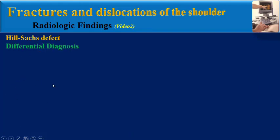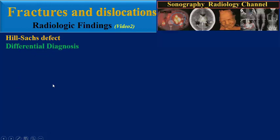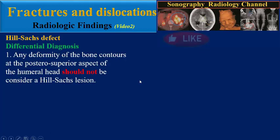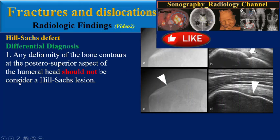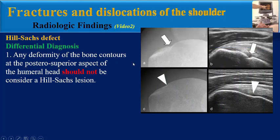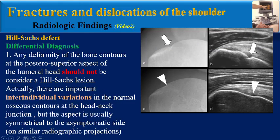Is there any differential diagnosis for a Heel Socks defect? Any deformity of the bone contours at the posterior superior aspect of the humeral head should not be considered a Heel Socks lesion. There are important inter-individual variations in the normal osseous contours at the head-neck junction, but the aspect is usually symmetrical to the asymptomatic side on similar radiographic projections.